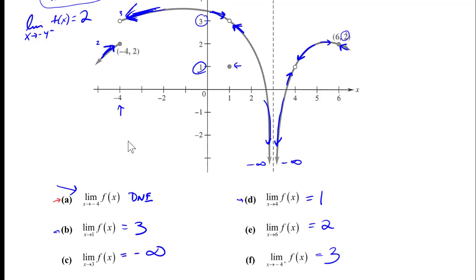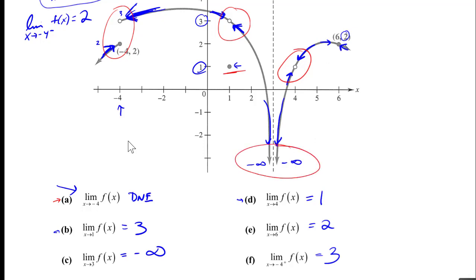So that was using a graph to determine limits — checking whether the left and right limits both exist, and if so, whether they agree. We saw cases where they existed but did not agree, cases where they agreed despite a hole or missing point, cases where both sides go to infinity, and the most usual case where they're headed to the actual value of the function.